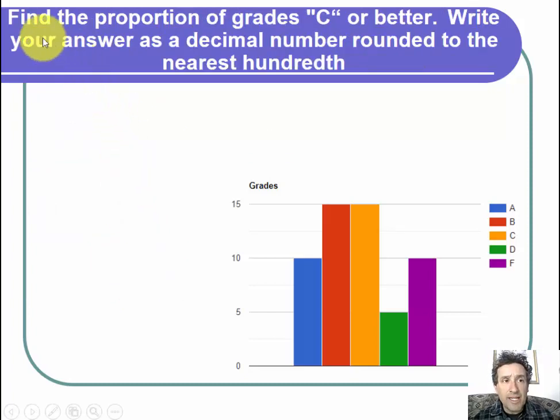Now let's look at the next question. Find the proportion of grades C or better. Write your answer as a decimal number rounded to the nearest hundredth. Same idea, we need to start out with a fraction.